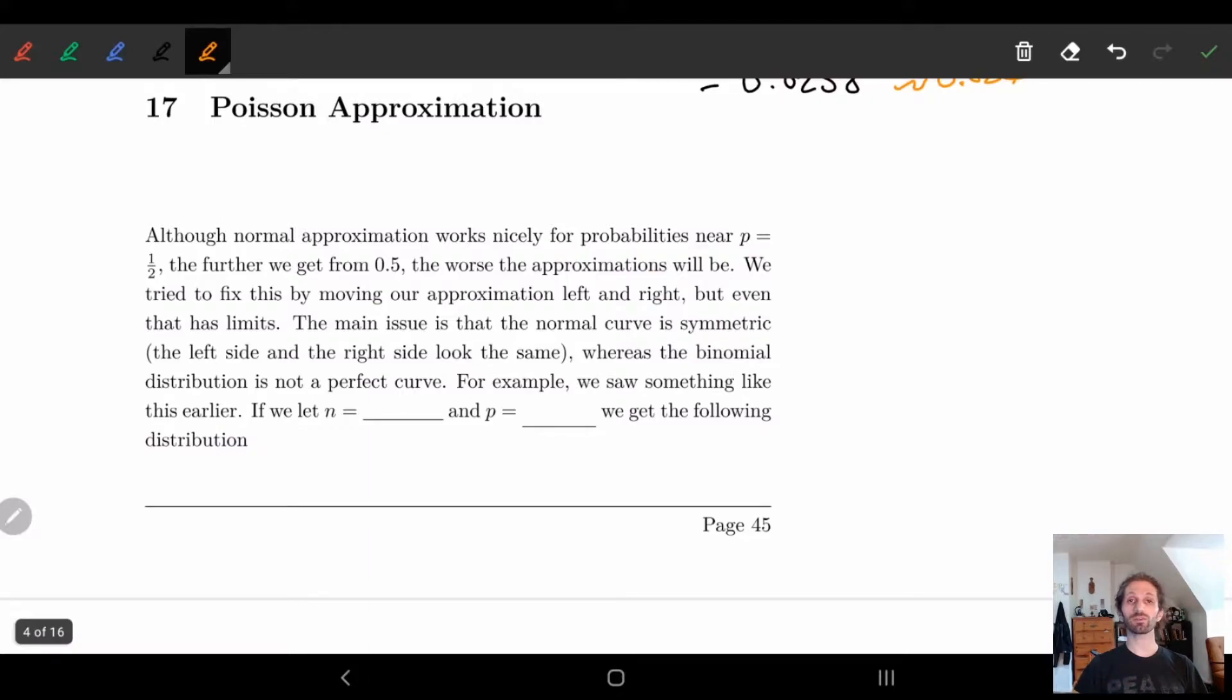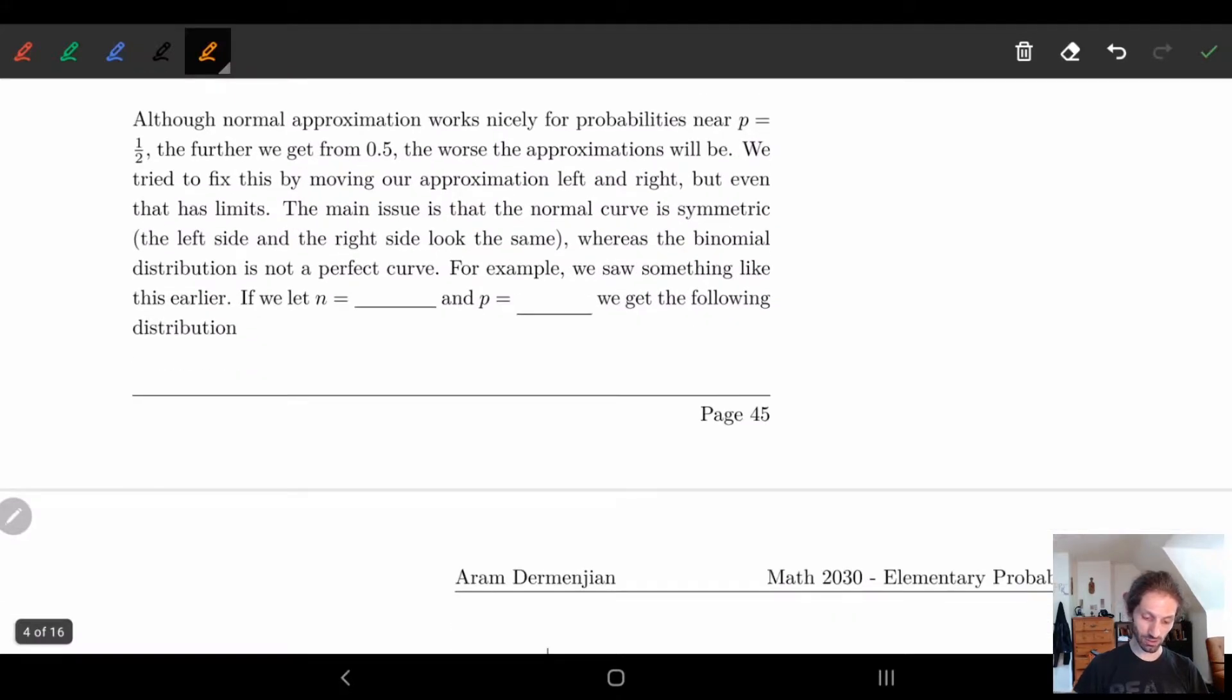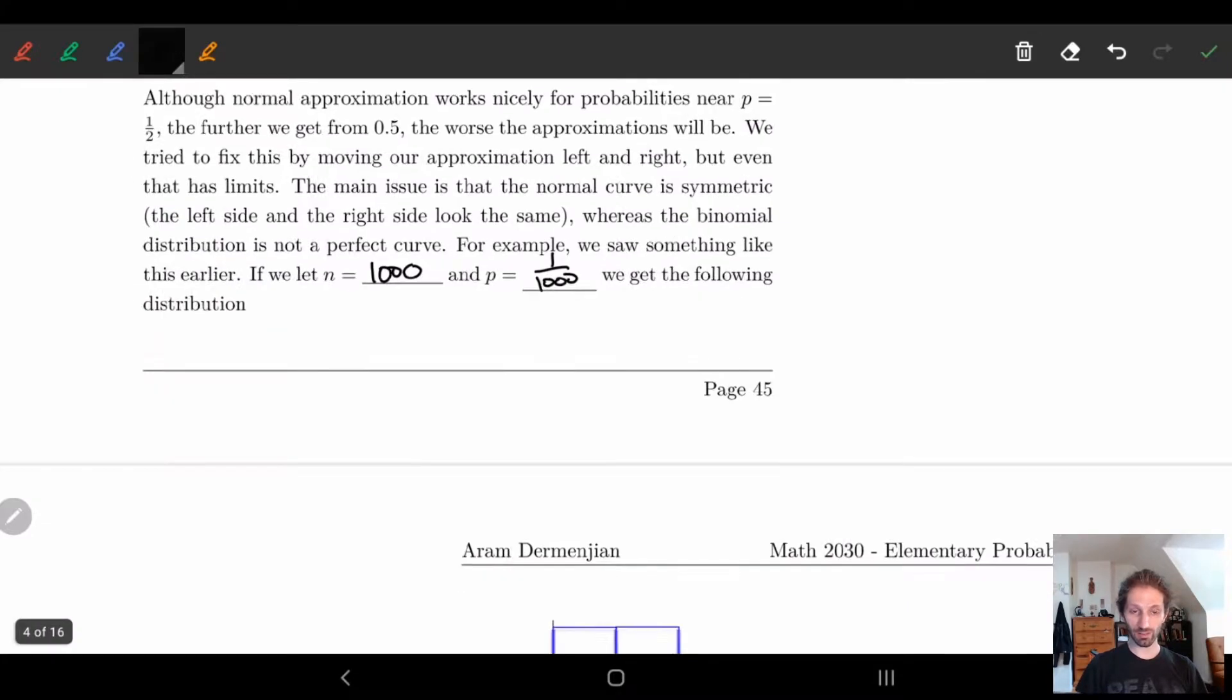This is really coming from the binomial distribution not being a perfect curve. We saw something like this earlier, so if we let N equal one thousand and let p be one over one thousand we actually end up getting the following distribution.